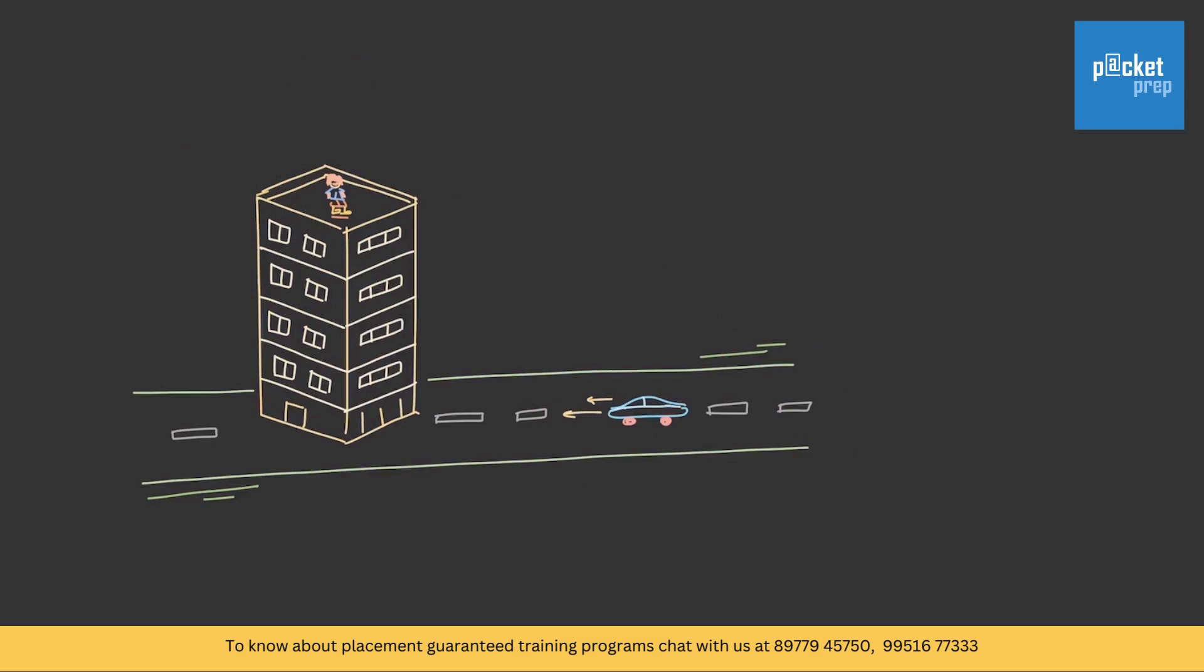The second type is the person is on the building or a tower and there is a car or a person walking on the road, and we are supposed to calculate at what speed this car is moving or how much distance it will move.